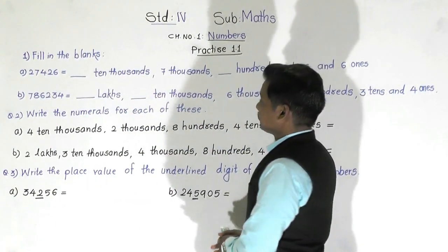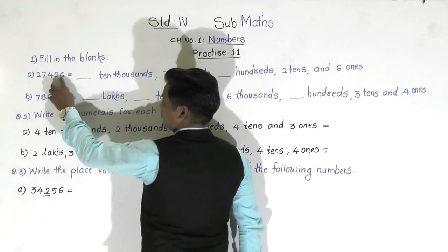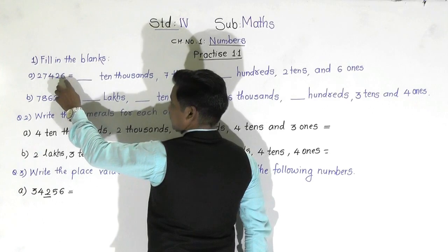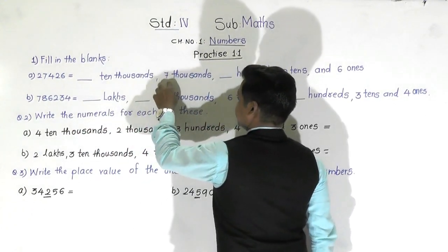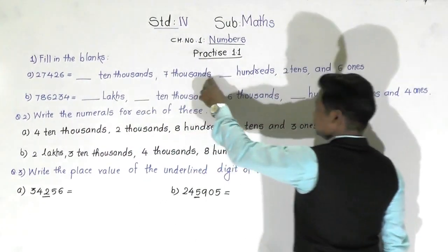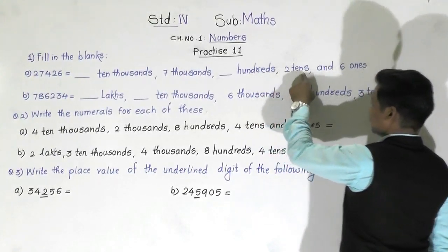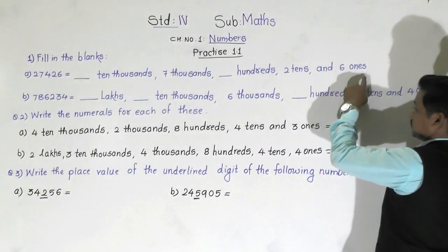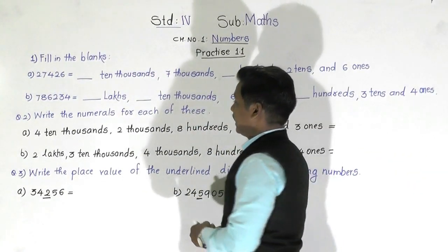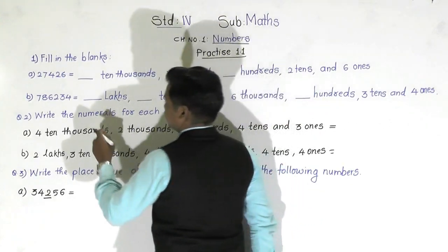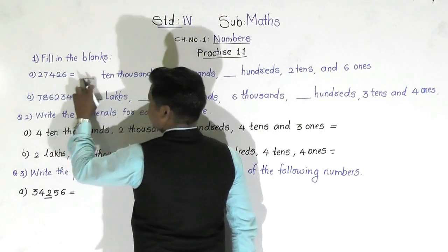27,426 is equal to dash 10,000, 7,000, dash hundreds, two tens and six ones. So we have to fill in the blank places.